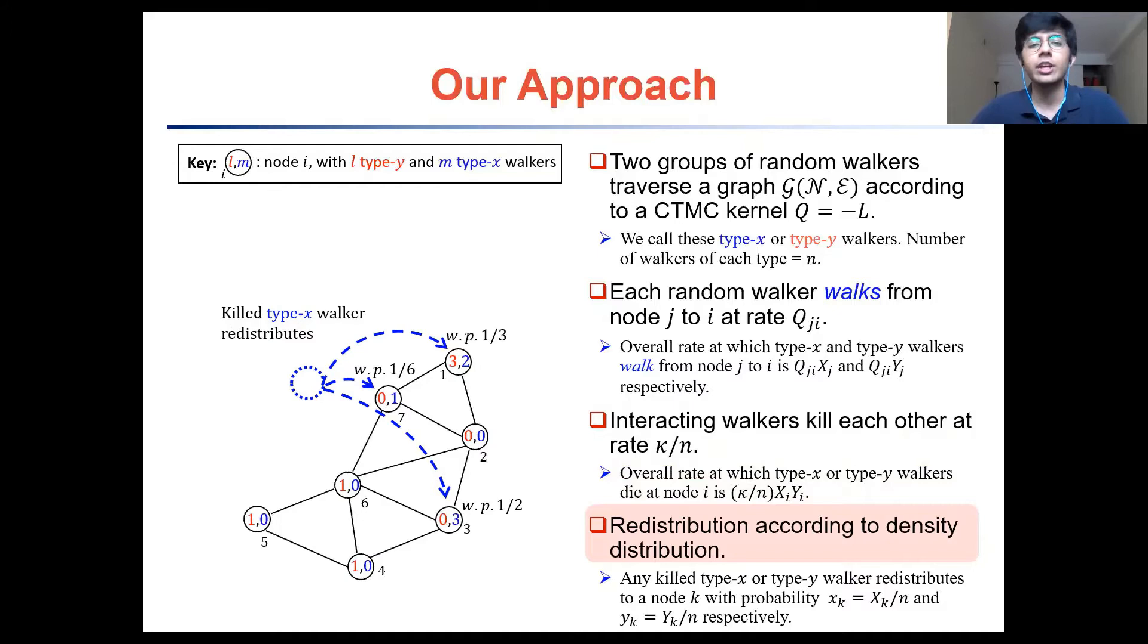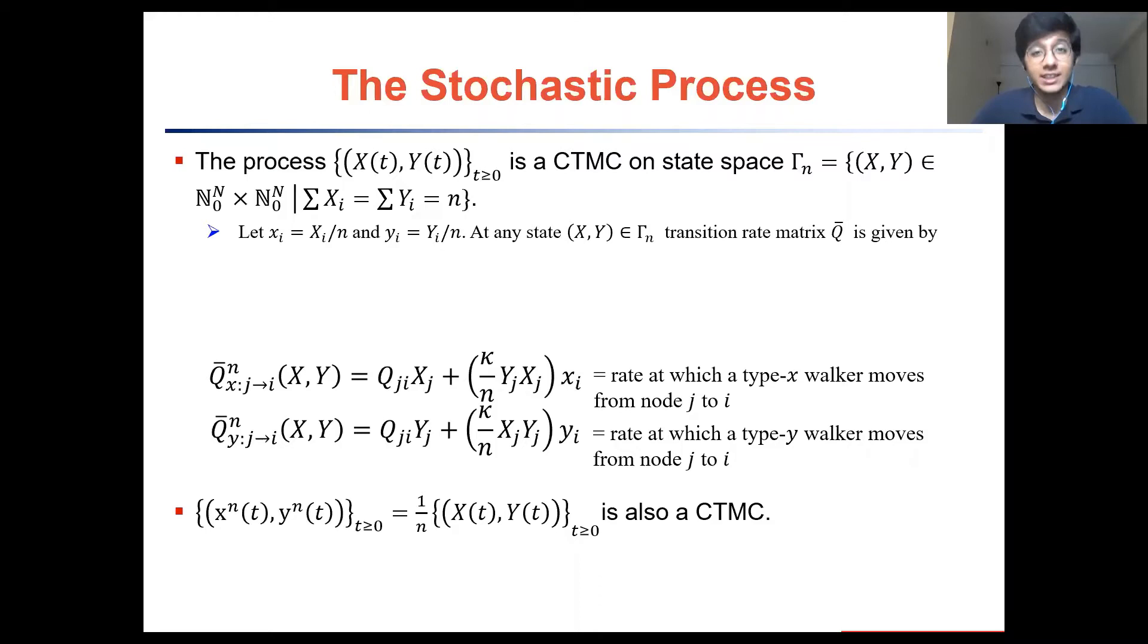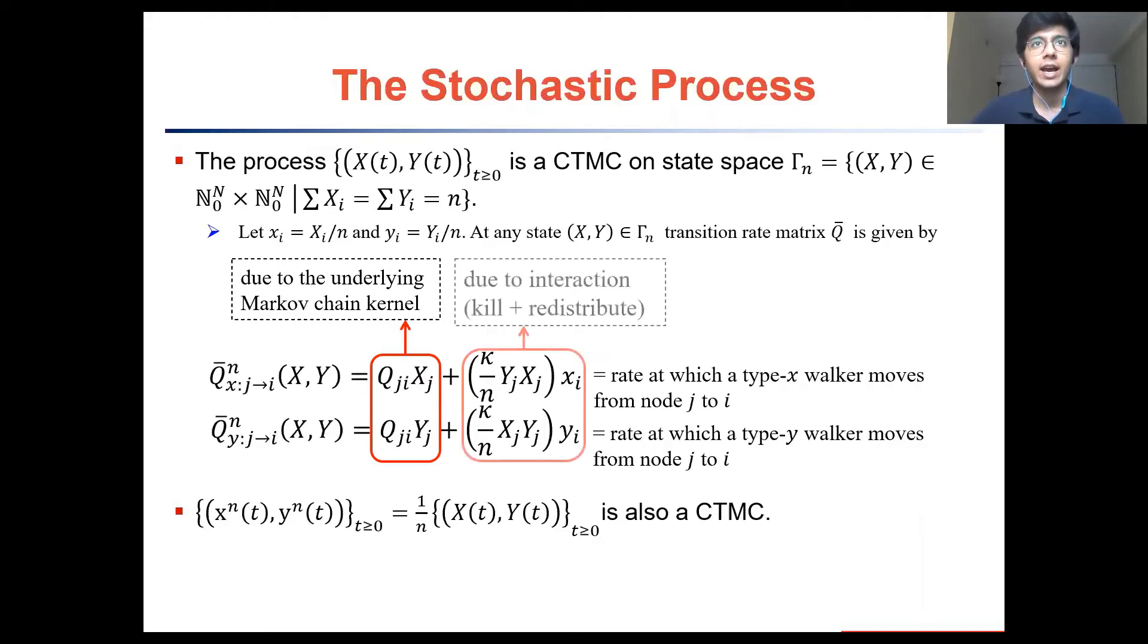This is only a brief intuitive overview of the process and the exact details are left to our paper. The stochastic process mentioned in the previous slide is the continuous time Markov chain and at any given state we can actually fill out precisely its transition rate matrix. Here q bar subs x from j to i represents the rate at which a type x walker would move from node j to i. Similarly q bar subs y from j to i would be the rate at which a type y walker would move from j to i. And this rate is actually divided into two parts. It can either be attributed to the underlying Markov chain of the process or due to the interaction, the kill plus redistribute mechanism described previously.